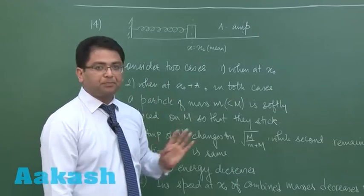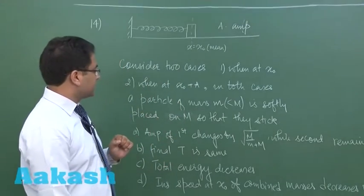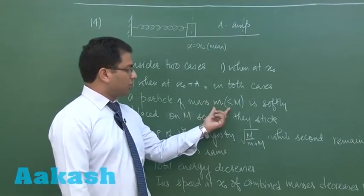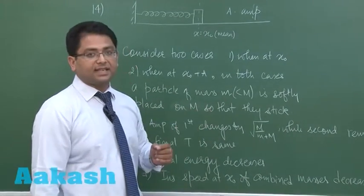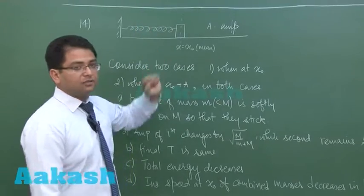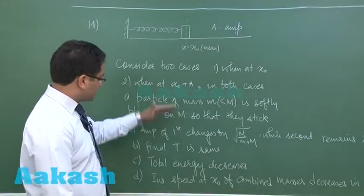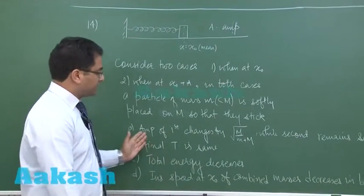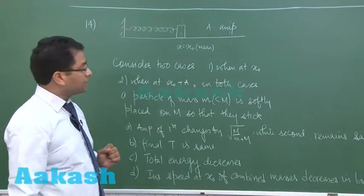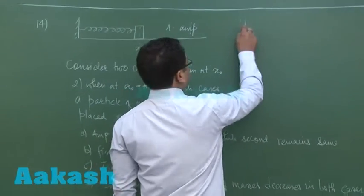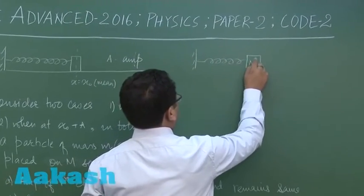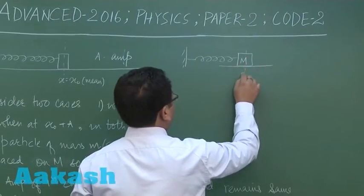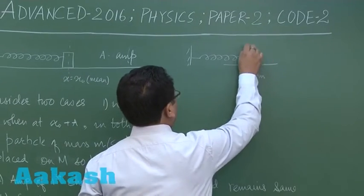In both cases a particle of mass small m is softly placed on capital M so that they stick. That means a small block is gently placed over it. Now based on that we need to see the amplitude and all factors. In the first case when the oscillating block was at mean a small block was placed.